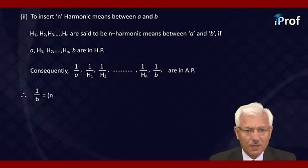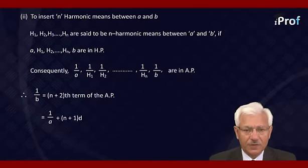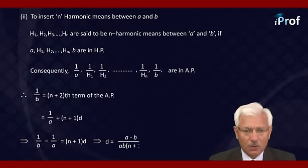Therefore, one upon B equals the (n+2)th term of the AP. That is, one upon B equals one upon A plus (n+1) times D, where D is the common difference. Therefore, one upon B minus one upon A equals (n+1) times D, or D equals A minus B upon AB times (n+1).